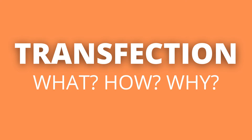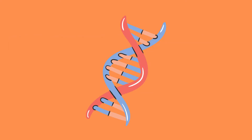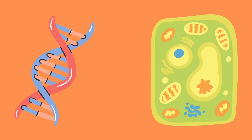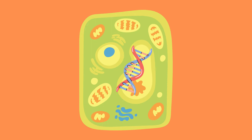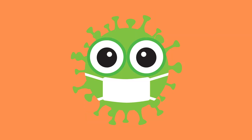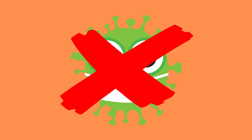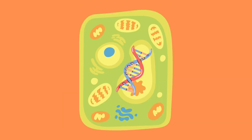Transfection. What is it? How does it work? And why is it useful? Transfection is the process of artificially introducing nucleic acid such as DNA or RNA into cells, utilizing any means other than viral infection. This can cause the cells to change, making it possible to study gene function as well as protein expression in the context of a cell.